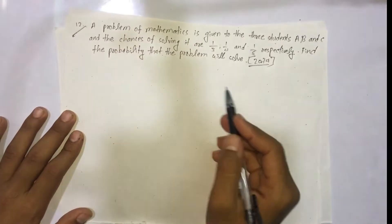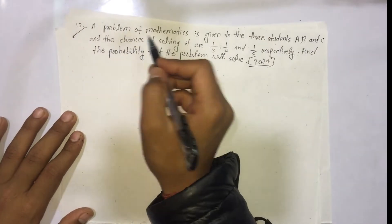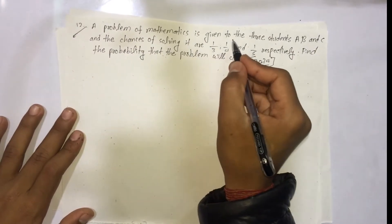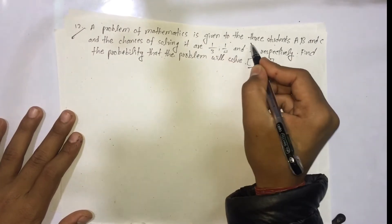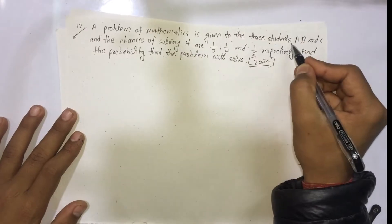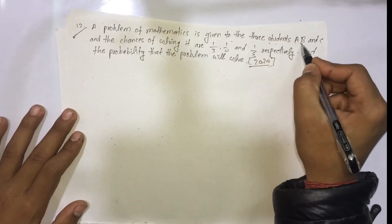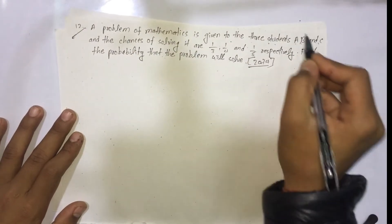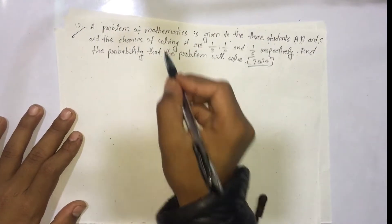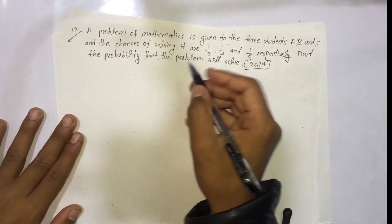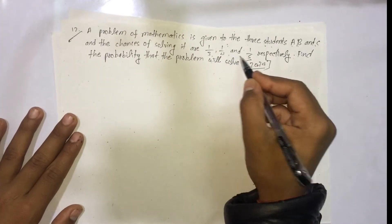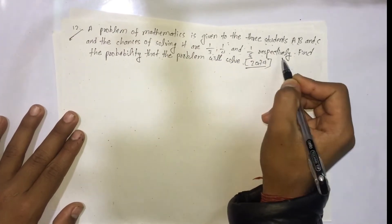A problem of mathematics is given to three students A, B, and C. The chance of solving it is 1/3, 1/4, and 1/5 respectively.